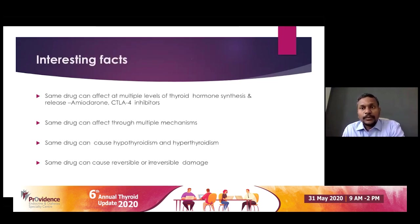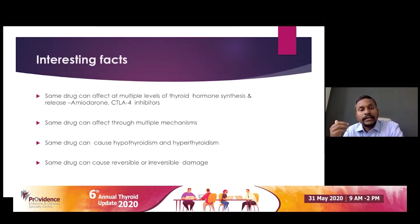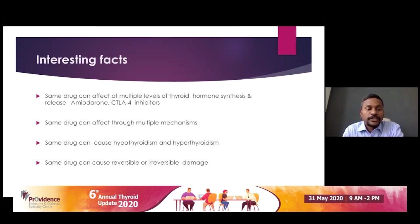Some interesting facts about drug-induced thyroid dysfunction: the same drug can act at multiple levels of thyroid hormone synthesis. For example, CTLA-4 inhibitors — cytotoxic T-lymphocyte antigen-4 inhibitors — can act at the level of the pituitary as well as the thyroid. The same drug can affect multiple mechanisms: at the pituitary level it causes hypophysitis, and at the thyroid level it induces more autoimmunity. The same drug can cause both hypothyroidism and hyperthyroidism depending on the stage of dysfunction. Many of these drug-induced changes are reversible, while others cause permanent damage.